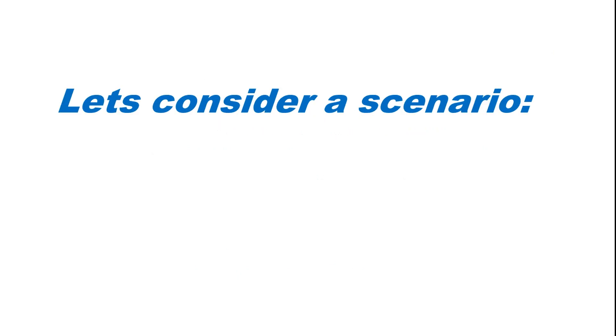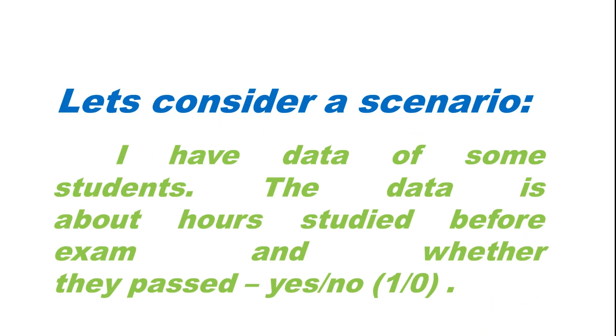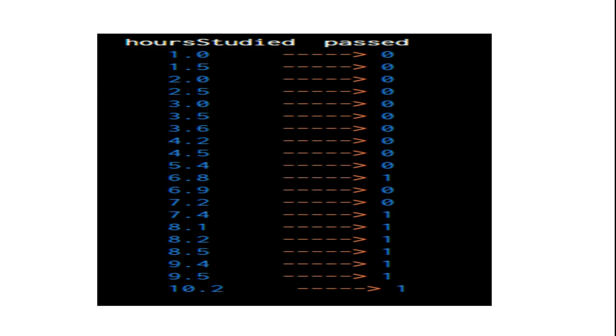Let's consider a scenario. I have data of some students. The data is about hours studied before the exam and whether they passed in the exam or not. So this is how the data looks. For example, a student who studied for 1 hour did not pass in the exam, and a student who studied for 10.2 hours passed in the exam.